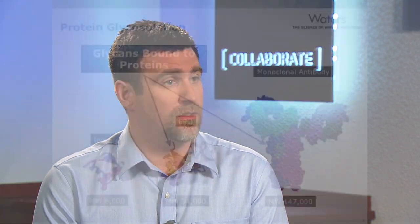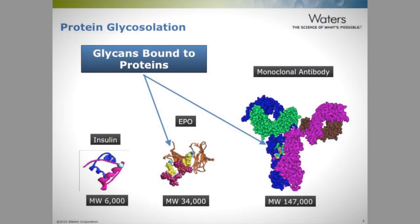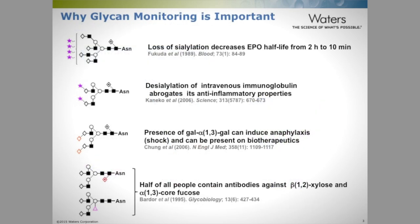A large move towards understanding and getting mass information is that the glycans themselves are often attributed and considered critical quality parameters within aspects of the molecule. And because of that, there needs to be a really clear understanding of what structures are on the molecule, and in addition to monitor those structures to ensure that throughout the production process those structures do not change — remaining consistent. The glycan structures themselves impart a lot of the safety and efficacy aspects of the molecule.